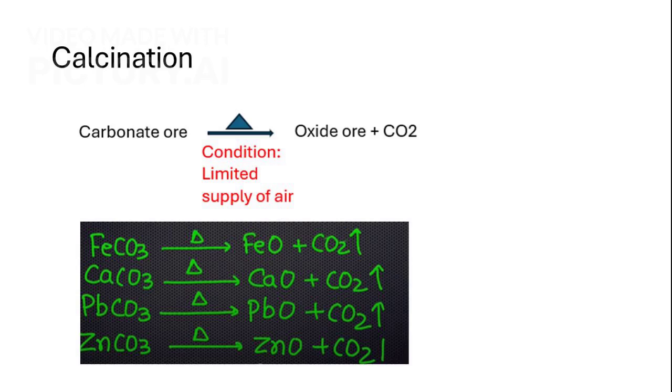Calcination requires a limited supply of air to convert carbonate ores into oxide ores, releasing carbon dioxide. This transformation is vital for extracting metals from their ores.